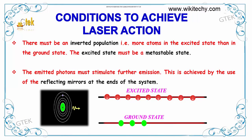If we talk about the conditions to achieve laser action, there must be an inverted population, so that there should be more atoms in the excited state than in the ground state. The excited state must be a metastable state. The emitted photons must stimulate further emission. This is achieved by the use of reflecting mirrors at the ends of the system. This is the major condition to achieve laser action.